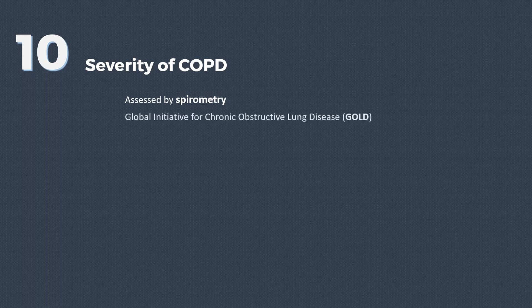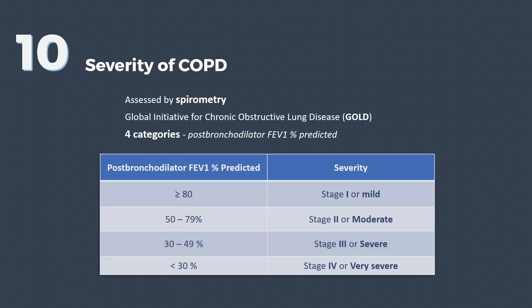Severity of COPD can be categorized into four categories according to the Global Initiative for Chronic Obstructive Lung Disease. This is based on post-bronchodilator FEV1 percent predicted.